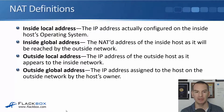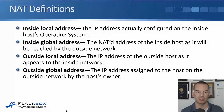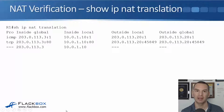The next definition is inside global address. That is the NATed address of the inside host as it will be reached by the outside network. So if somebody in the outside network is sending traffic in, what address are they going to be using as their destination address? In our example, the inside global address is 203.0.113.3. So inside local is the private address on the inside; inside global is the public address that is used to reach the inside host.